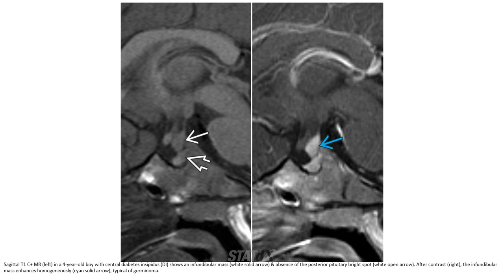This is a T1C+ MRI. The left image is from a 4-year-old boy with central diabetes insipidus. On the contrast-enhanced image on the right, the infundibular mass enhances homogeneously, which is typical of germinoma.